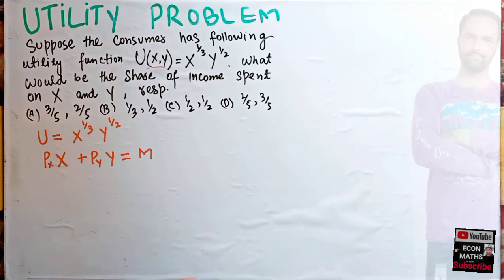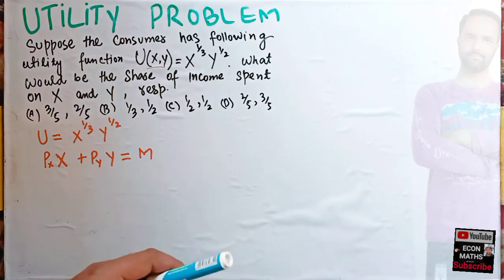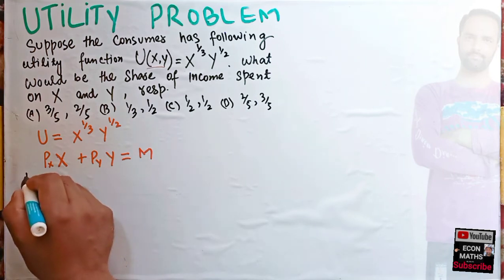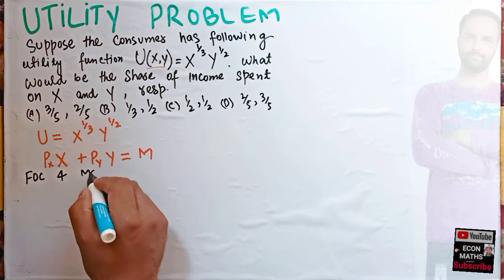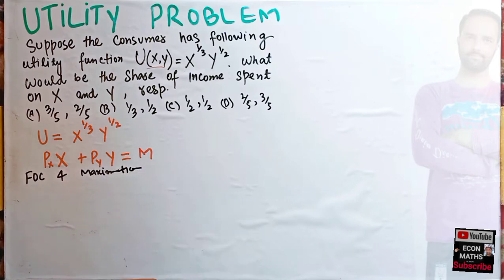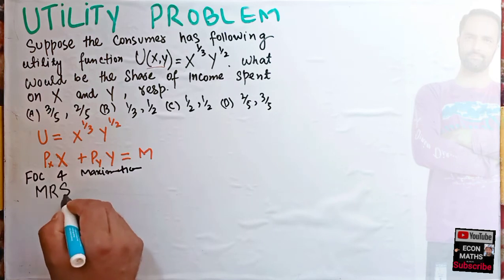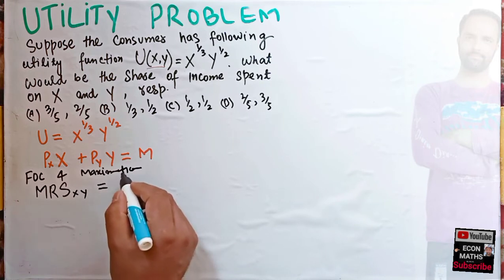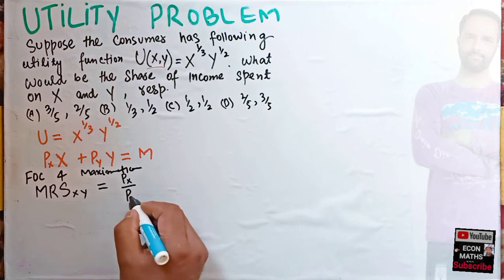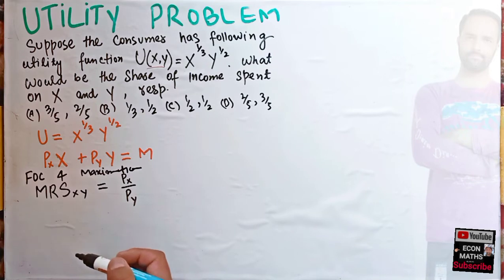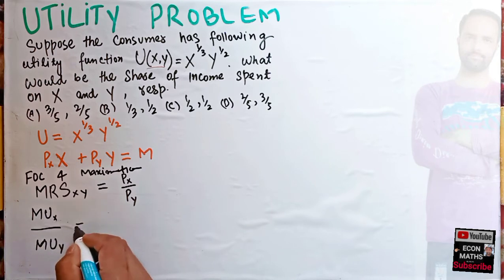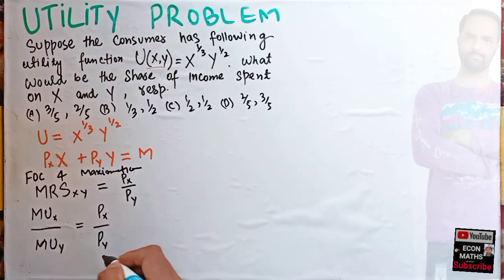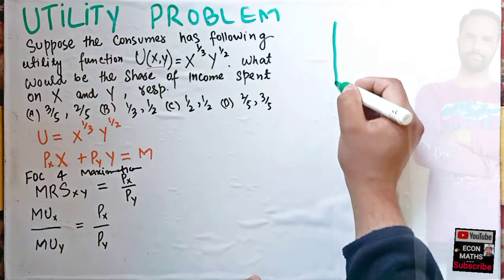Now, for utility maximization we can use the Lagrange method or the tangency condition. The first-order condition for optimization or maximization requires that the marginal rate of substitution between good x and good y equals the ratio of their prices: MRS = P_x / P_y. This means marginal utility of good x divided by marginal utility of good y equals P_x / P_y.